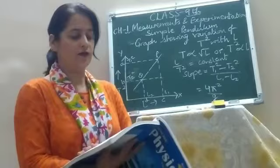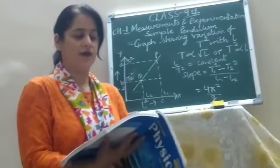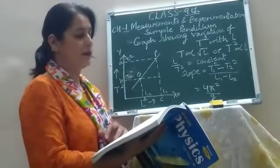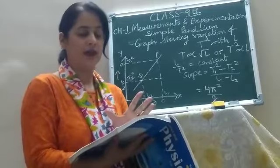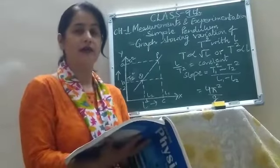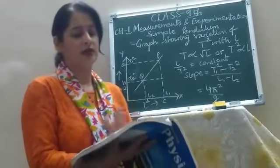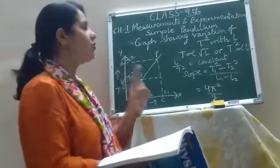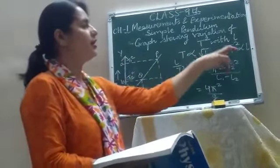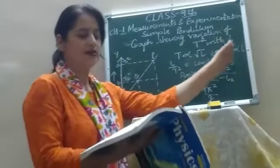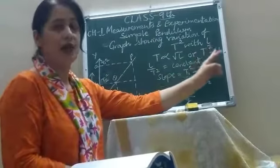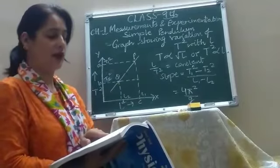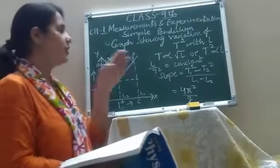If you observe the table carefully, you will notice that if the length of the pendulum is made 4 times — first the length was 25 centimeters, now it is 100 centimeters — the time period is doubled. At 25 cm the time period was 1 second; at 100 cm it is 2 seconds. This means the time period is directly proportional to the square root of the length of the pendulum, or T² is proportional to L. So L upon T² will always remain constant — in all these observations, L upon T² equals 25, which is a constant.